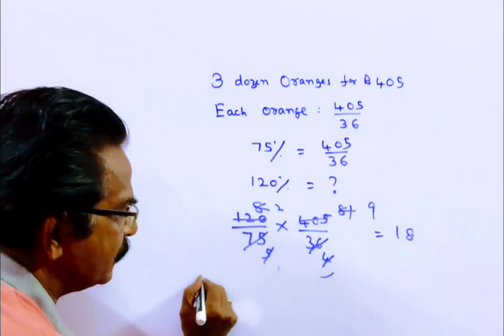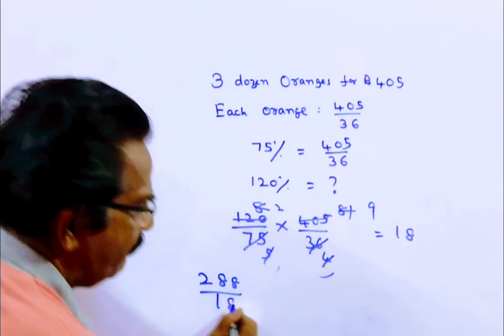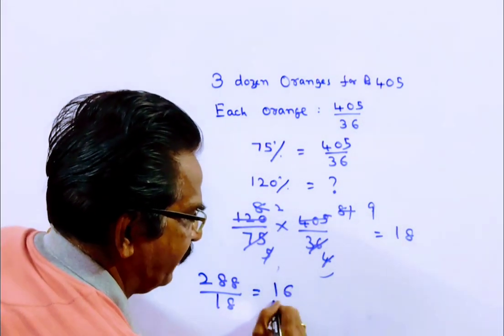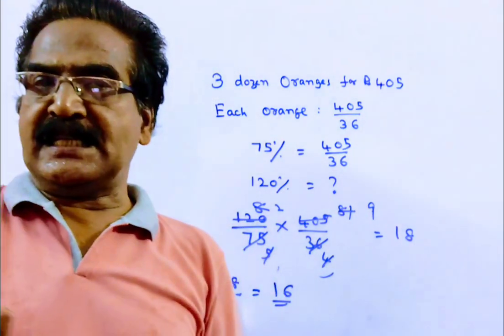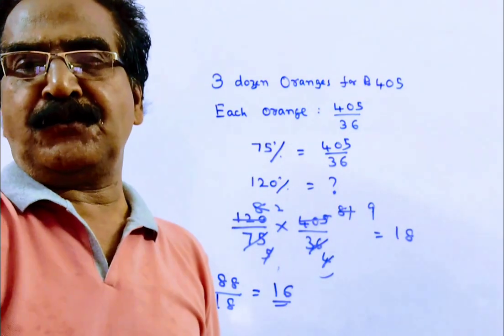So, how many oranges can be sold for Rs. 288? 18 into 16, friends. So, he has to sell 16 oranges for Rs. 288 to have a gain of 20%. Thank you.